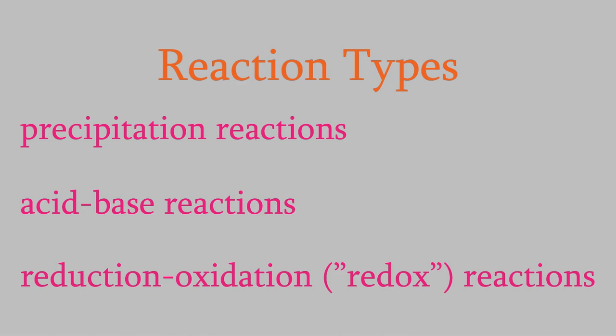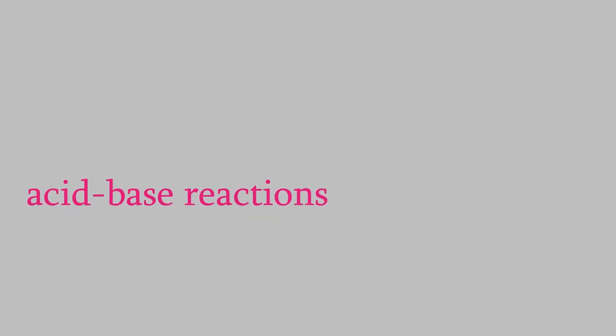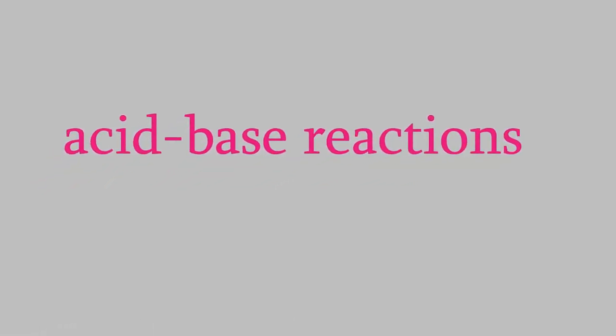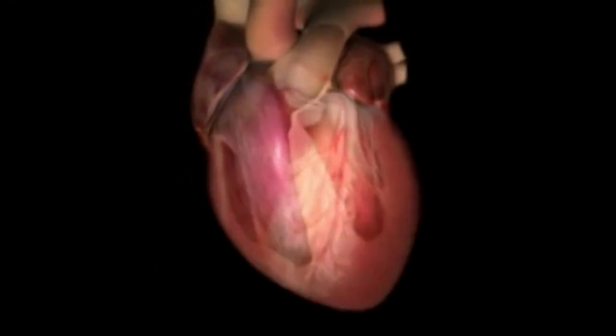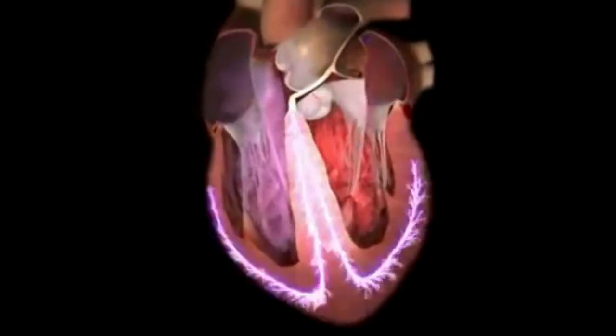In the last video, we talked a lot about precipitation reactions, so in this one we'll tackle the second category: acid-base reactions. These are among the most important reactions in many biological systems, and if we understand how acid-base reactions work, we'll be able to perform many of the most important calculations that chemists do. By the end of the video, we'll understand enough that I'll perform what could be a risky experiment. Will I end up dying? Probably not, but watch to the end to find out.